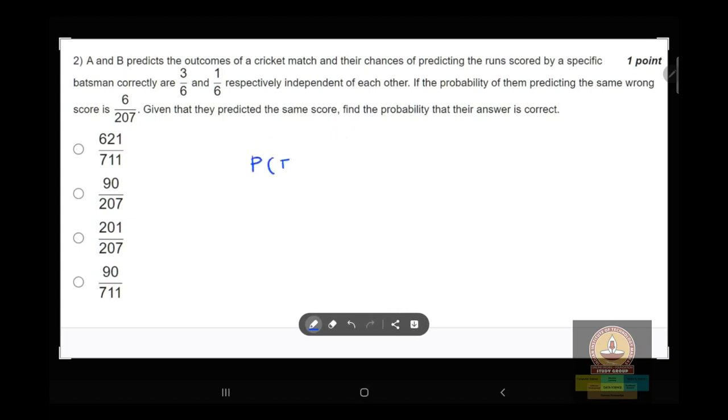P(E|F) equals to P(E) times P(F|E) upon P(E) times P(F|E) plus P(E complement) times P(F|E complement).